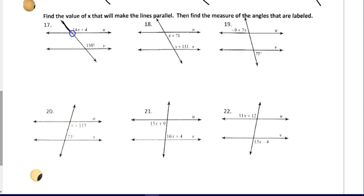Find the value of X that will make them parallel. Well, notice that this is the same as that. They're both obtuse. So, 14X plus 4 equals 130. Subtract 4, 14X equals 126. Then, you're just going to take 126, divide both sides by 14. So, 126 divided by 14 is 9. X equals 9. Let's look at the directions. Find the value of X. I did that. Then, find the measure of the angles labeled.